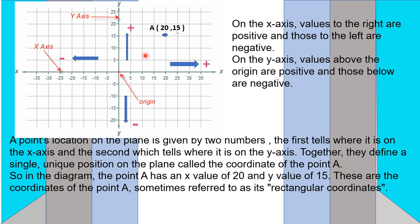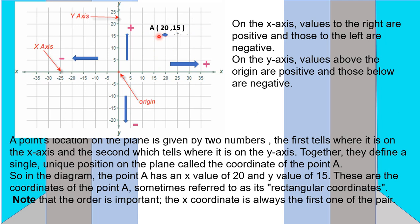In this figure, point A has an X-value of 20 and a Y-value of 15 — these are the coordinates of point A, also referred to as its rectangular coordinates. The value 20 for the X-axis is also known as the abscissa, and the value 15 for the Y-axis is the ordinate.